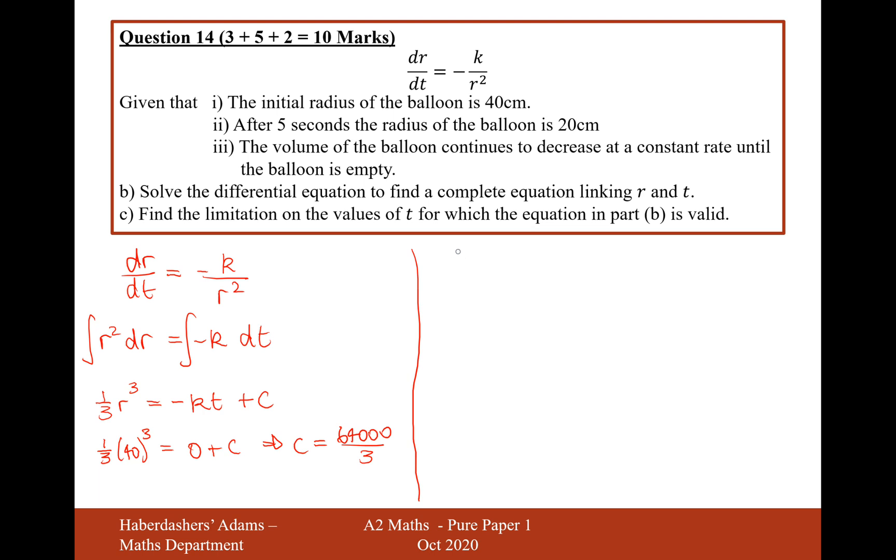So therefore, the equation is 1 third r cubed equals minus kt plus c. Now, we also could probably do with working out what k is equal to. After 5 seconds, when t equals 5, the radius of the balloon is 20, so r equals 20. So let's substitute it into this expression here. 1 over 3, 20 cubed equals minus k times 5 plus 64,000 over 3.